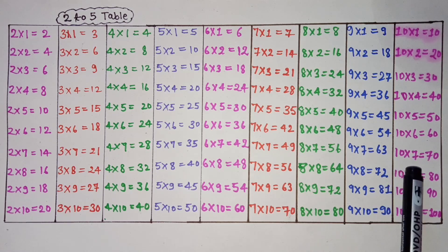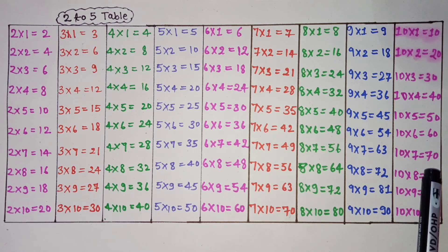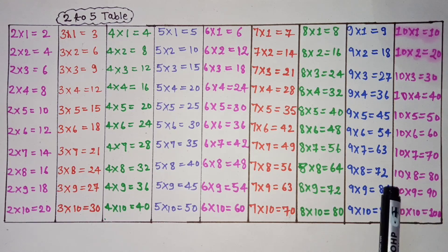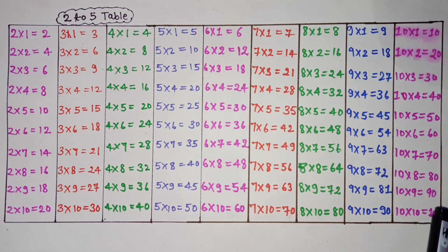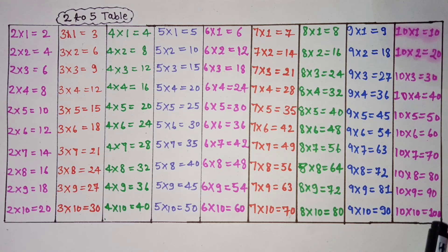10 7s are 70, 10 8s are 80, 10 9s are 90, 10 10s are 100.